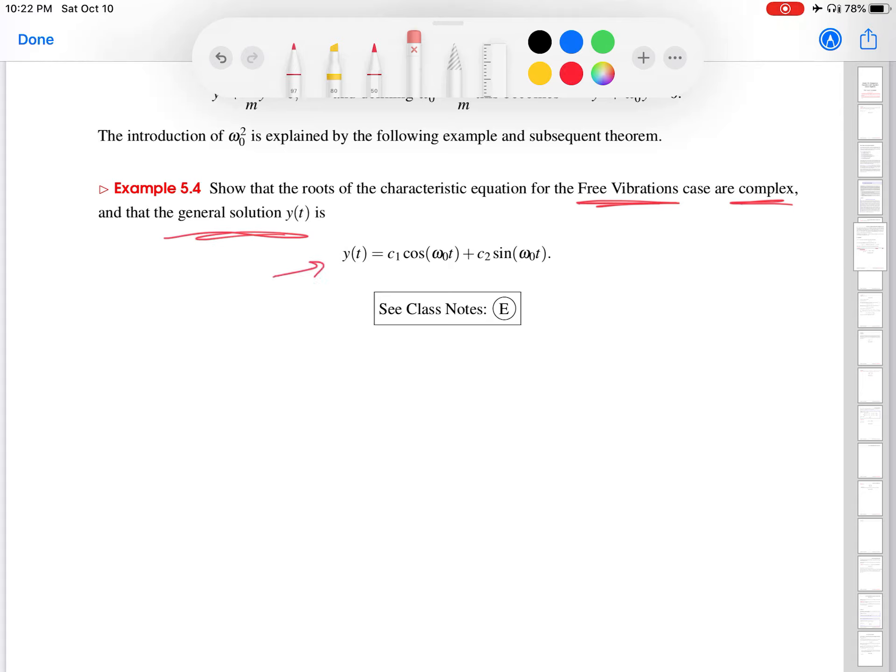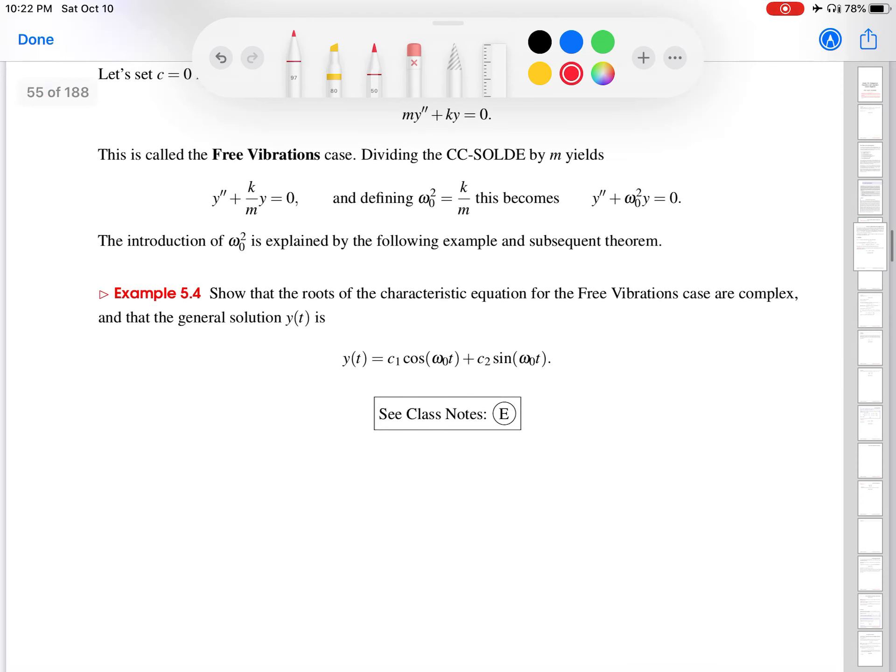So let's scroll up a little bit, remind ourselves of what this free vibrations case is. So the free vibrations case is when basically C equals zero, meaning that there's no damping, that's sort of up here. There's no damping, there's no air resistance, hence the free vibrations case.